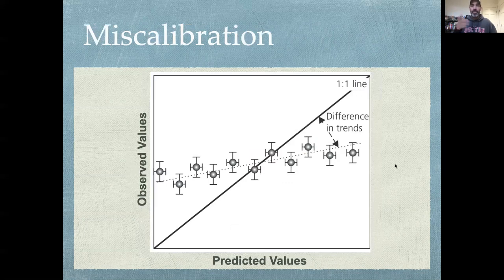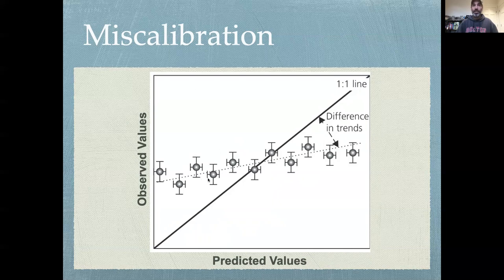The thing that is probably even more common than seeing systematic biases is to see what's called here a miscalibration. So here this model is not on the one-to-one line but it's also not clearly biased in the sense that all the positive errors and all the negative errors kind of cancel out and on average the model is doing fine. So if you calculate a bias statistic you don't see one, but on the other hand it's clear that the trend is different between the predictions and the observations.